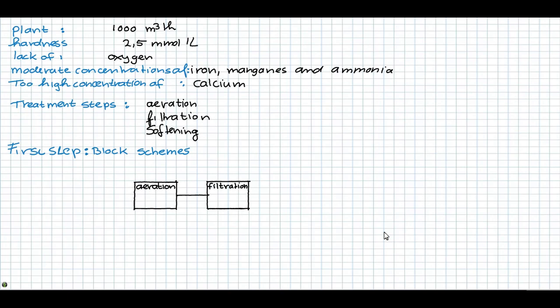In this treatment plant, we have three alternatives to place the pellet softening in the treatment train. Namely, before aeration and filtration. So we can put them over here, the pellet softening.